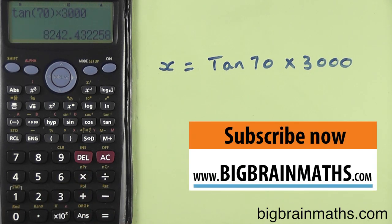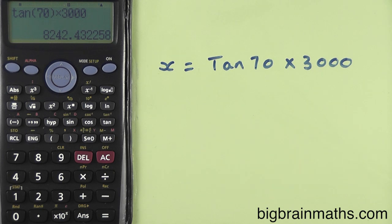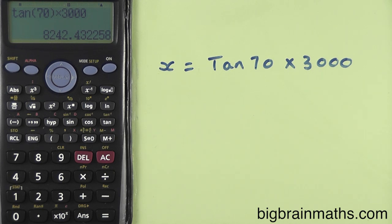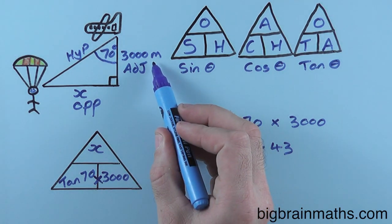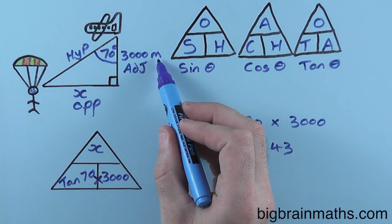Now, this gives us a decimal answer. Always round your answers to two decimal places, unless the question tells you to round to something different. Because we've measured a length, we need to put some units in, and we always use the units that is given to us in the original triangle. In this case, it's metres.